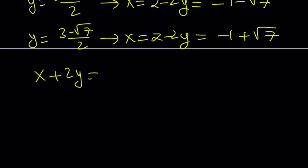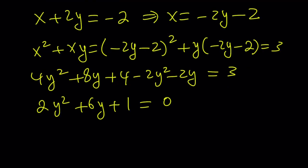x plus 2y can also be negative 2. And from here we can write x as negative 2y minus 2 and substitute into the first equation. And we get this quadratic equation. Using the quadratic formula, we get the solutions.